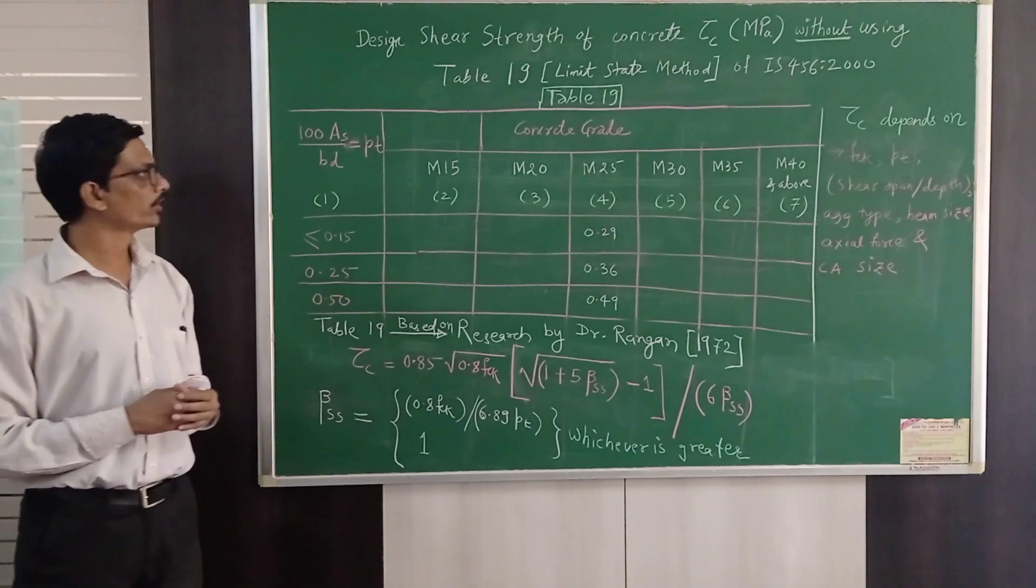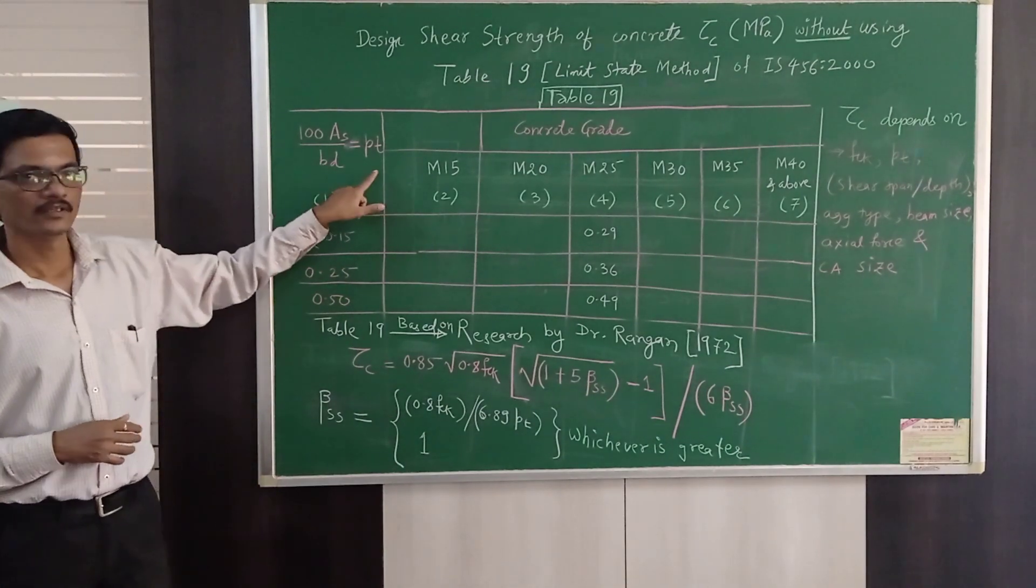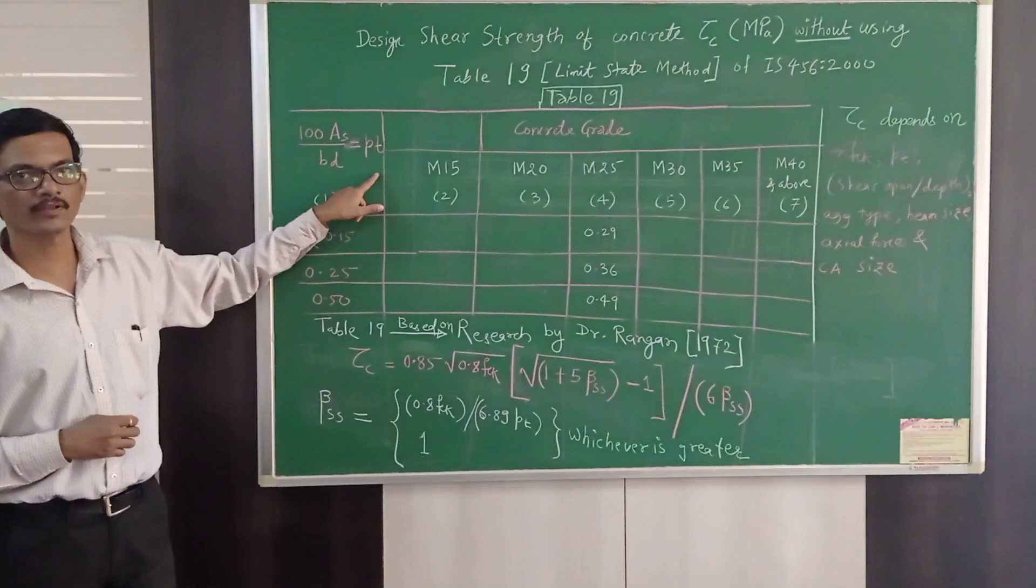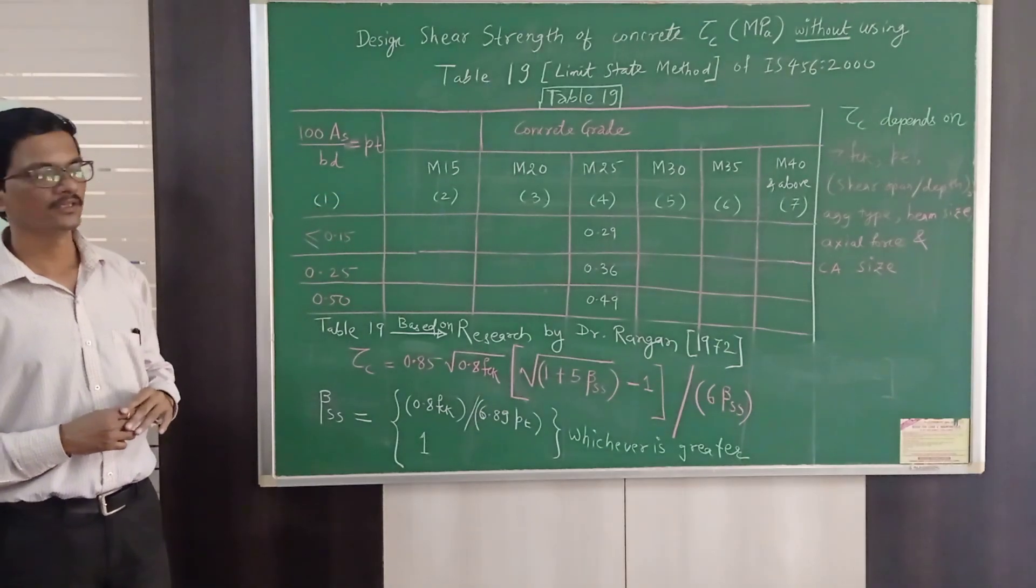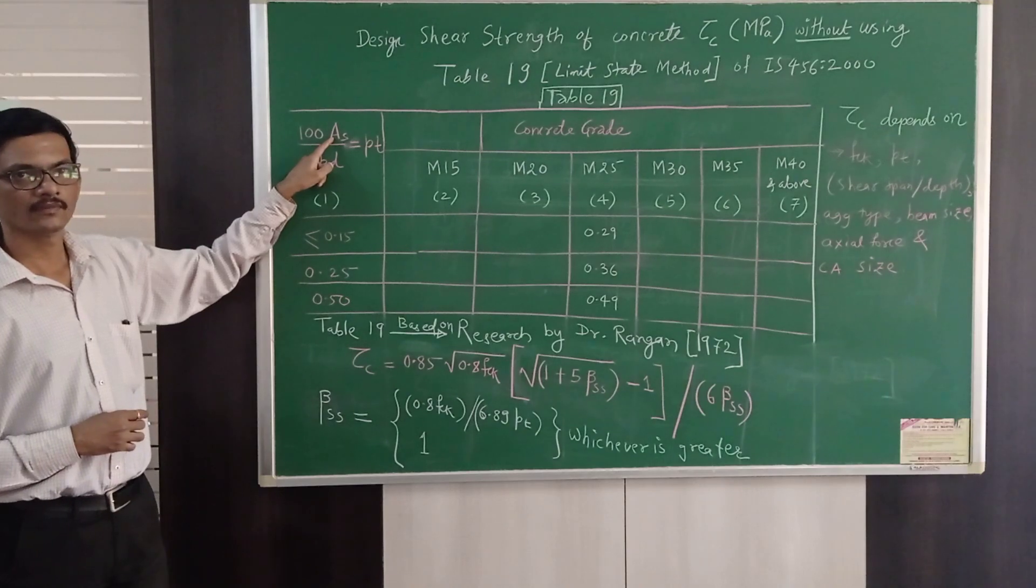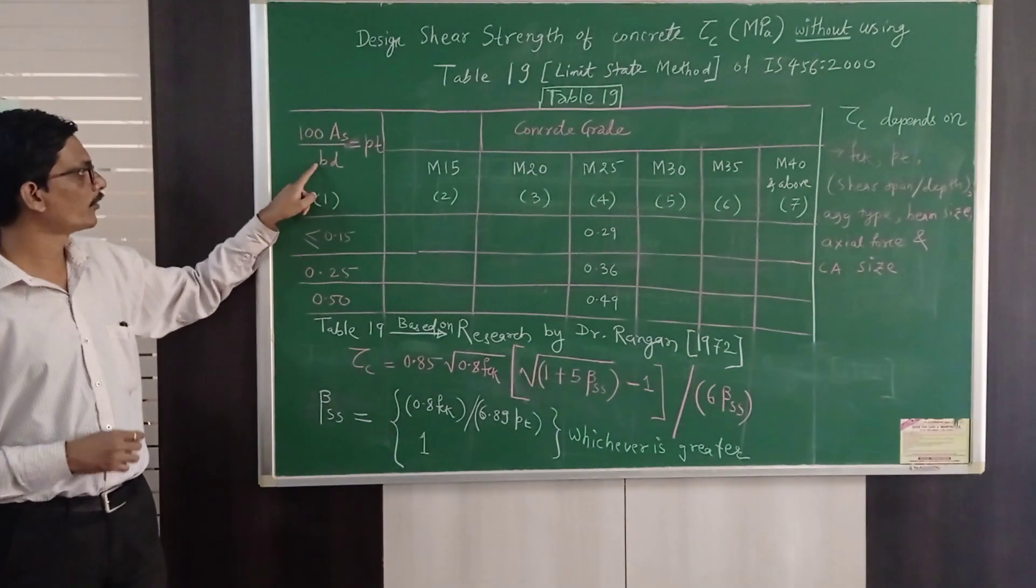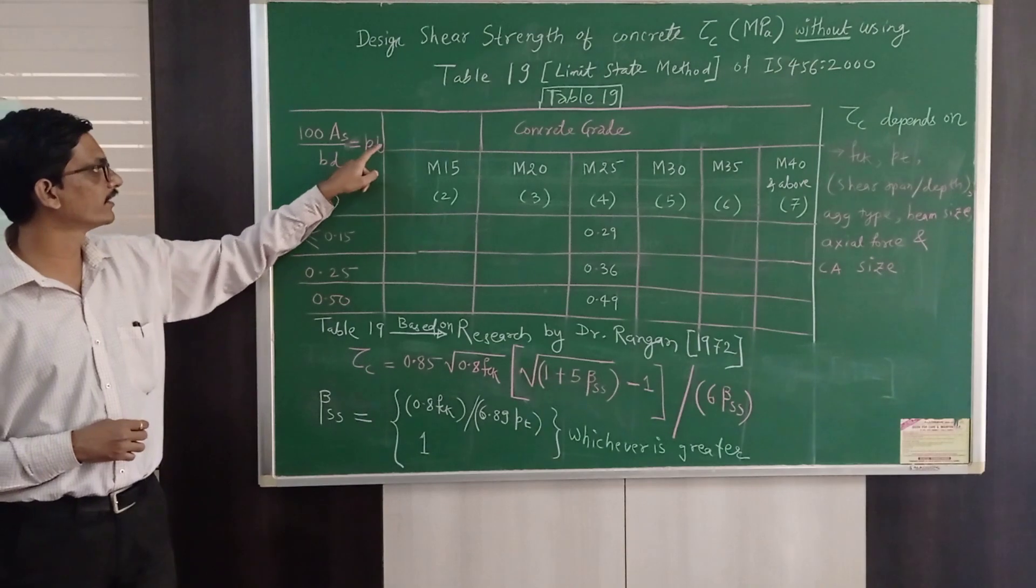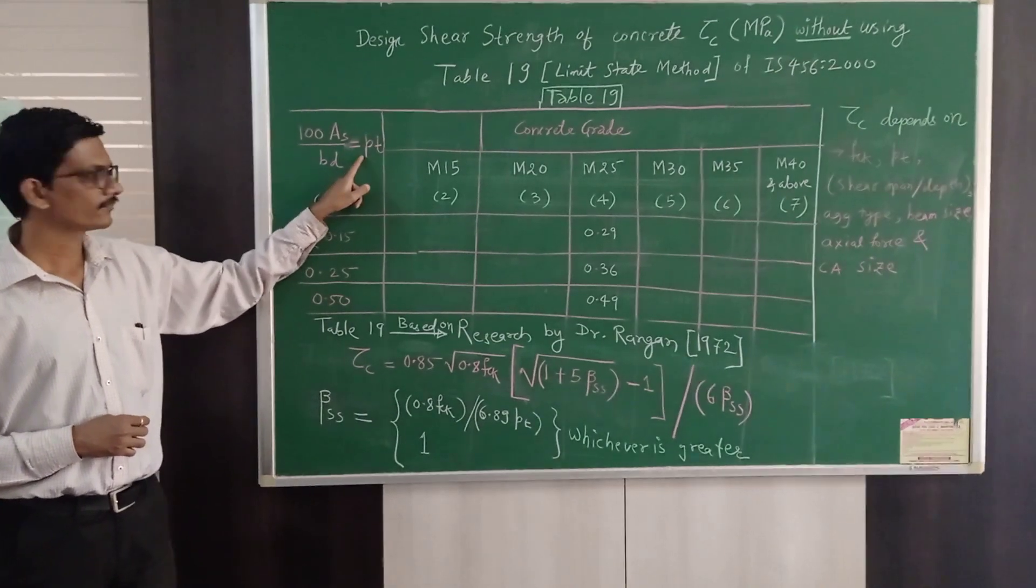Here we know that this column is percentage steel. For example, suppose you have singly reinforced beam then we calculate area of steel times 100 divided by width of beam and effective depth of beam we get the percentage of steel.